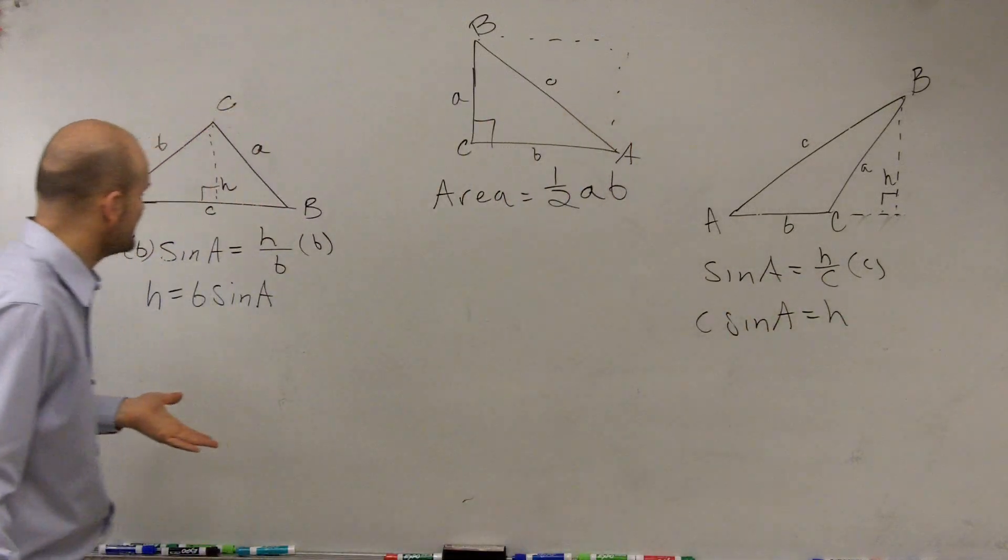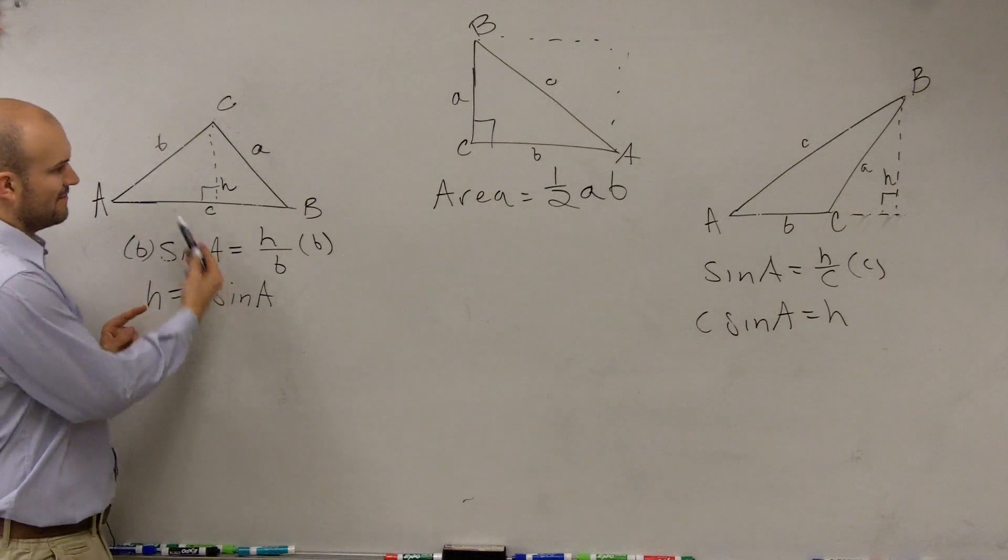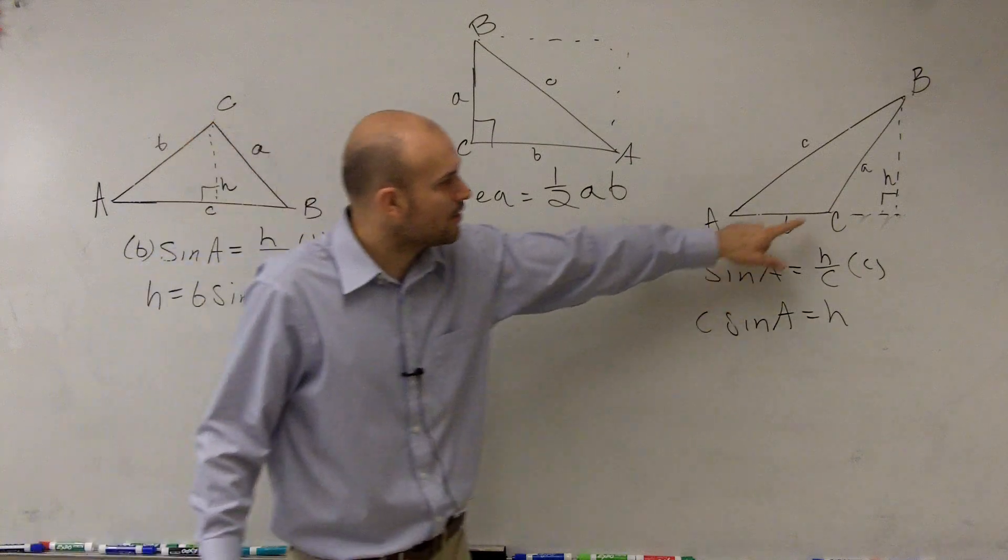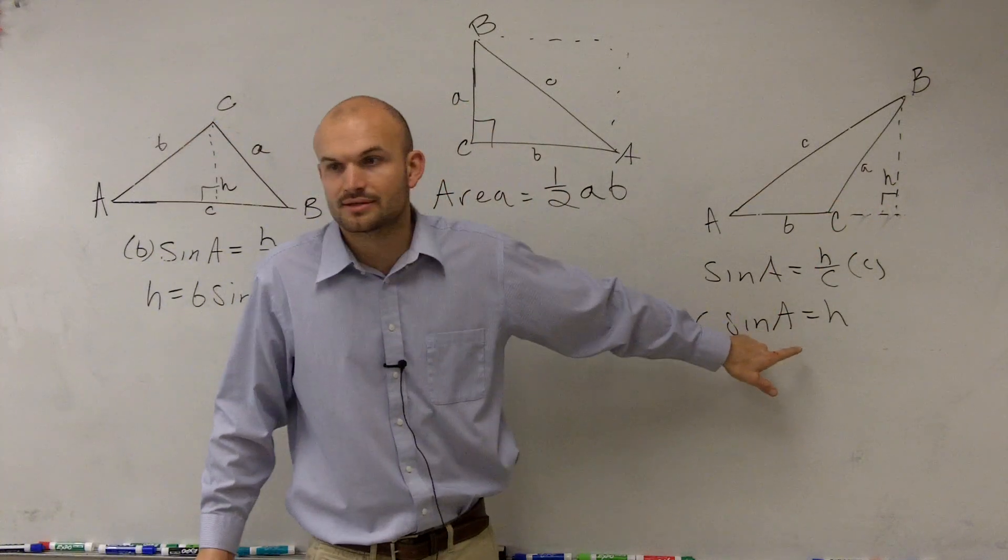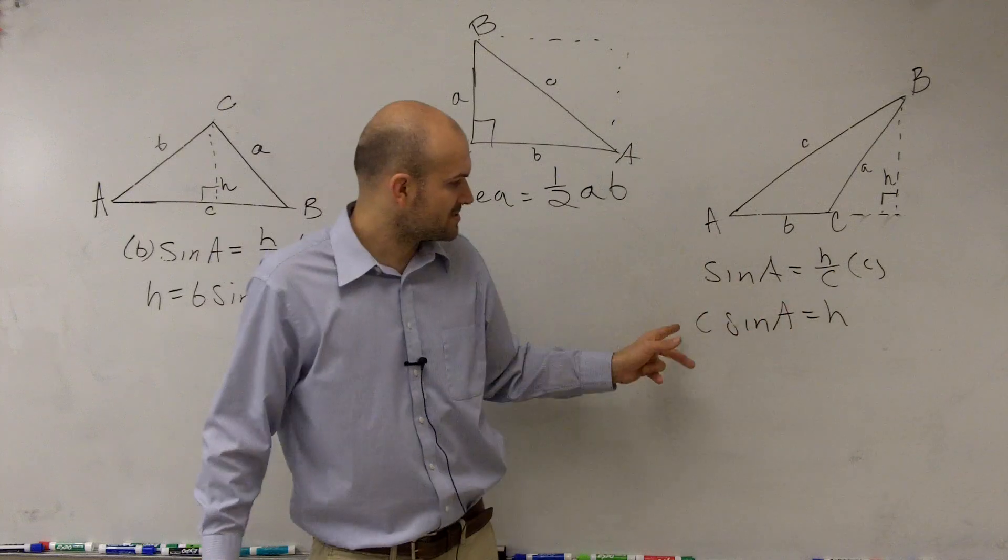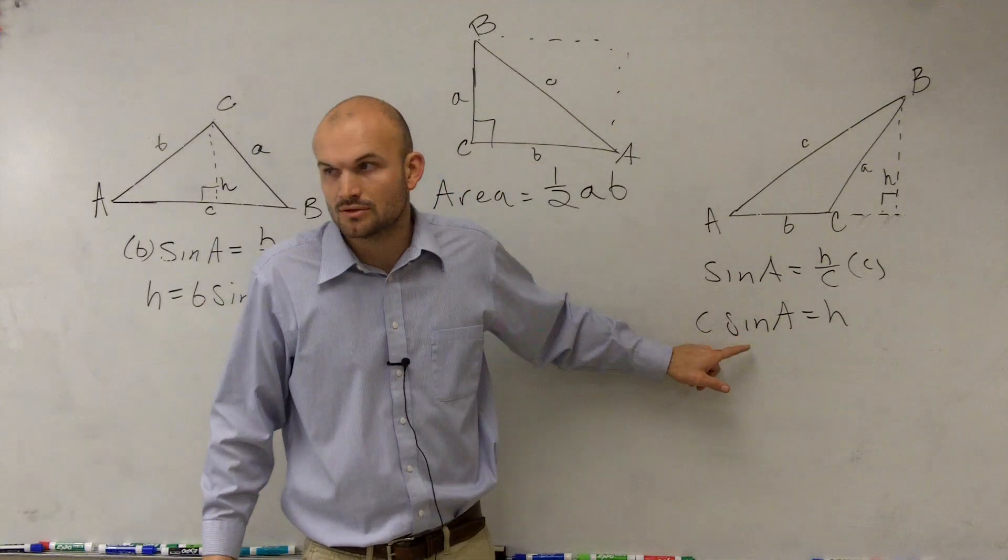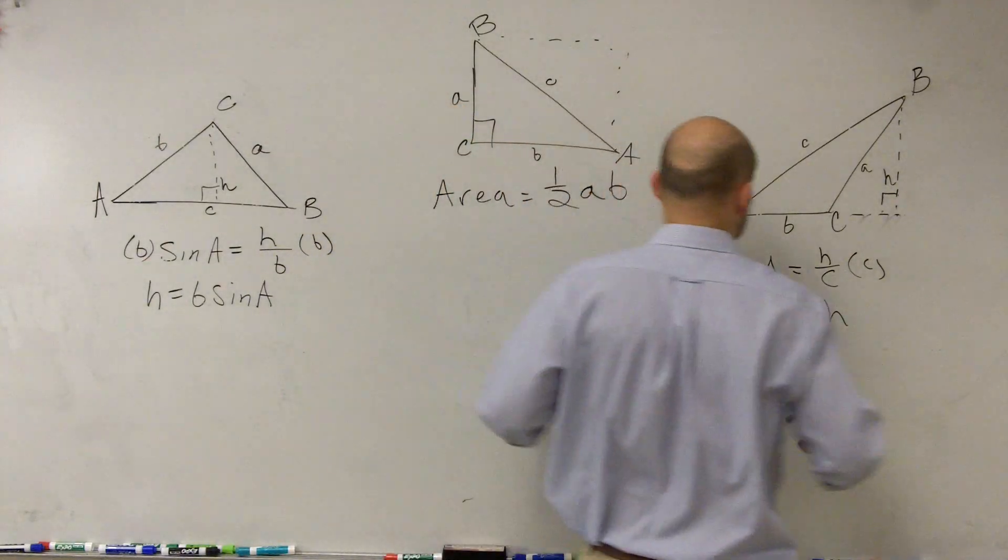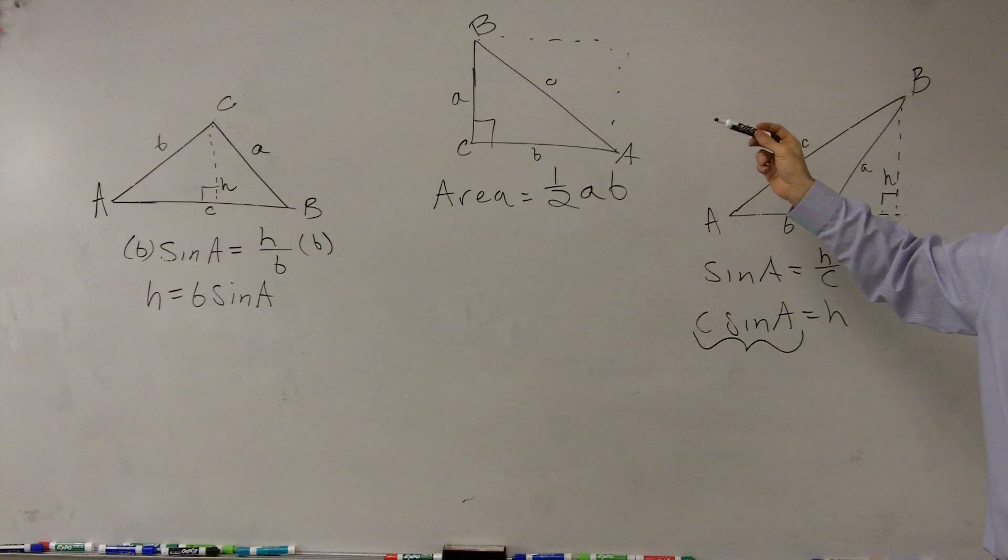So as you guys can see, it doesn't matter. However, it's not going to matter if it's what kind of triangle I'm dealing with, but your hypotenuse or your H, your height, is always going to be one length times your other length, right? Or, I'm sorry, your one length of your triangle times your height. Or, I'm sorry, here is your height, which is going to deal with the sine of your angle, right, times another length of your triangle.